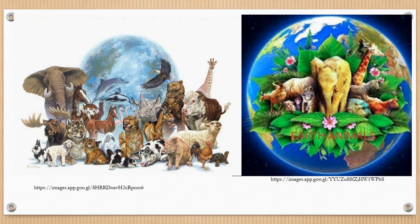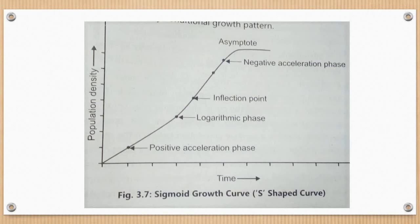The level beyond which no major increase can occur represents the saturation level, or carrying capacity. The number of organisms in a particular habitat increases up to a saturation level. That saturation level is the carrying capacity of that habitat, and beyond the carrying capacity no habitat can harbor more individuals. The environment resists increase in population beyond this limit. This sigmoidal S-shaped growth curve is also called the logistic or realistic growth curve.